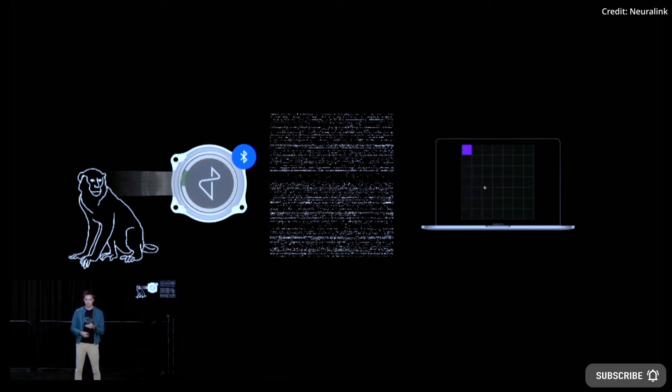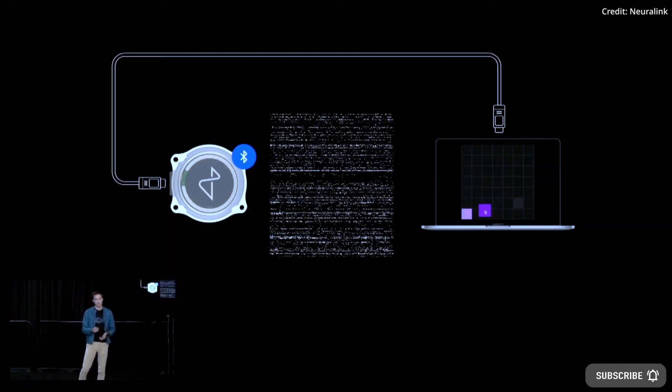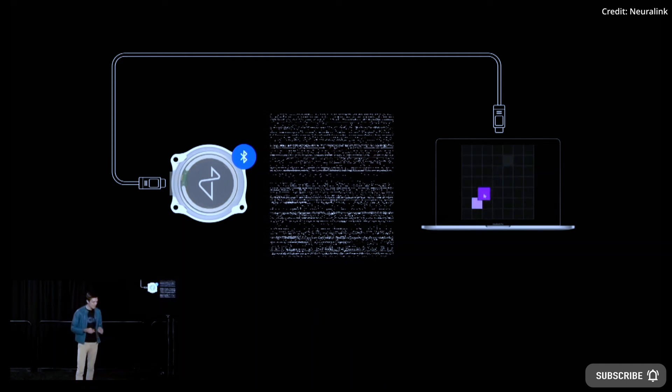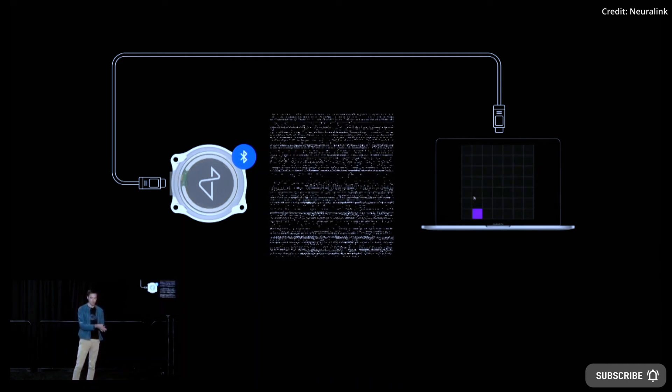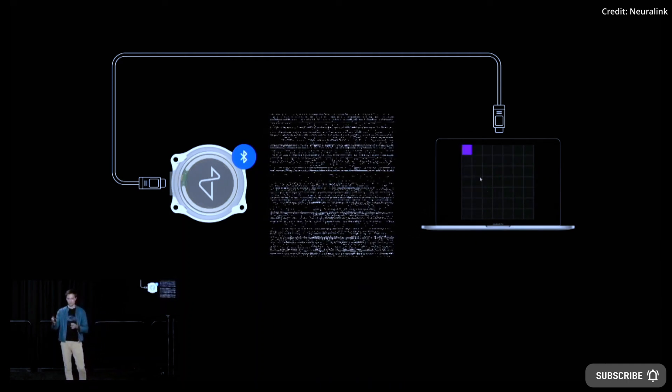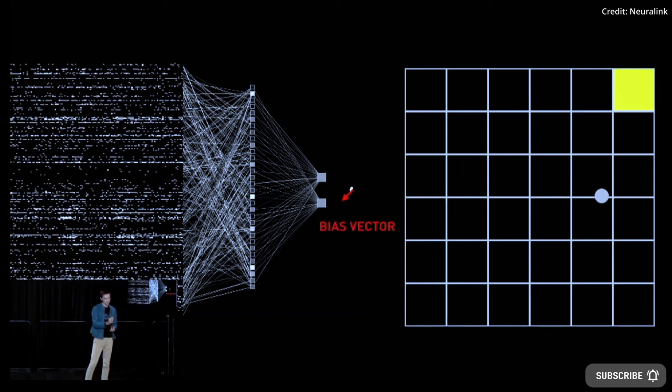Neuralink would start by recording neural activity in the brain's movement areas. As users think about moving their arms or hands, Neuralink would decode those intentions, which would be sent over Bluetooth to the user's computer.